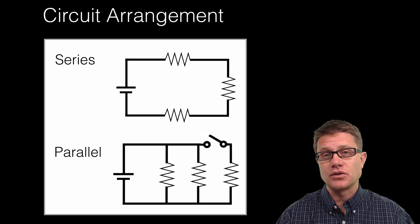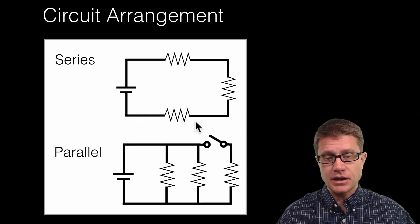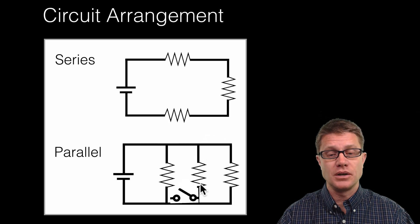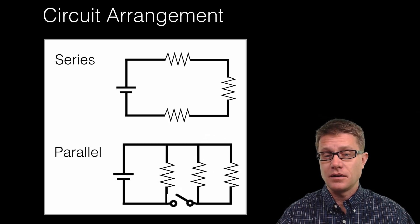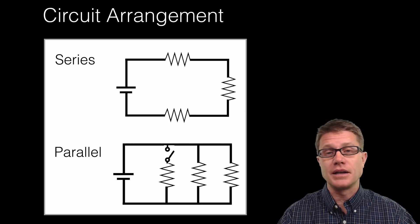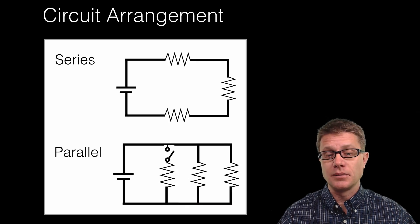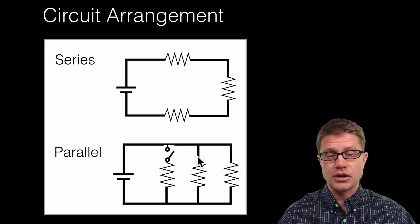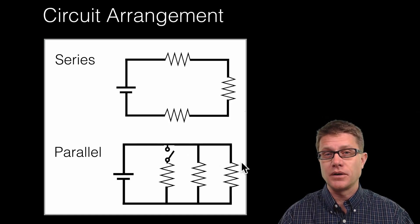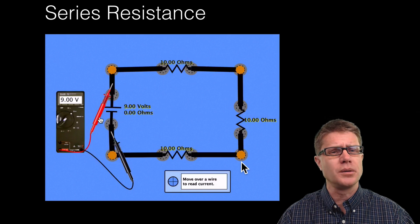Watch what happens if we add a switch in a parallel circuit. There's not going to be flow through that one side of the parallel circuit, but we're still going to have current through the other branches. If we add it in a different position, we won't get return on two of the branches, but we'll still have flow through the remaining one. So understanding how a series is different from a parallel circuit is important, and it can get more complex than that.